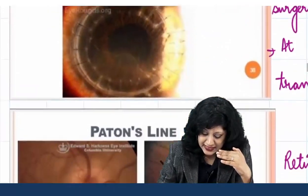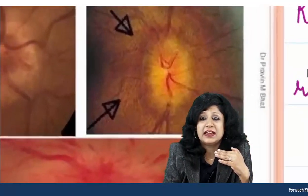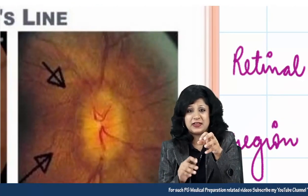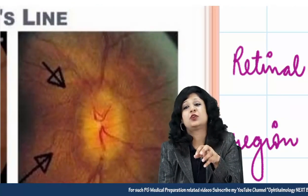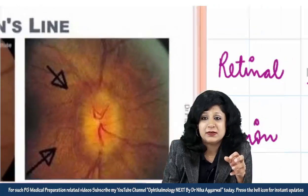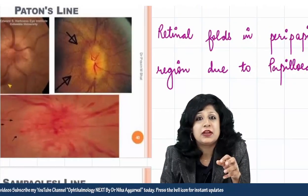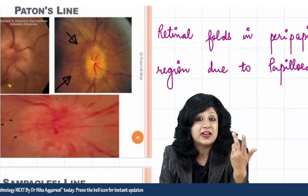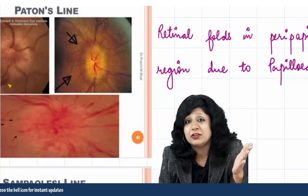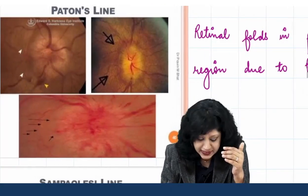Next is Patton's lines. These are folds present in the retina and the choroid, and they occur due to papilledema. You find them whenever there is raised intracranial pressure causing optic disc edema in both eyes — those are Patton's lines.